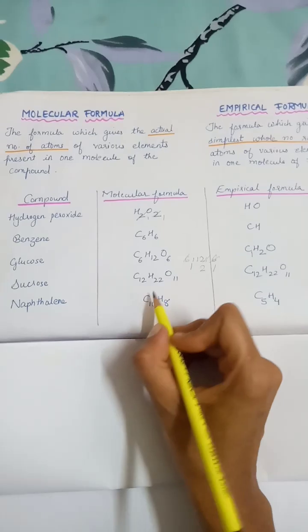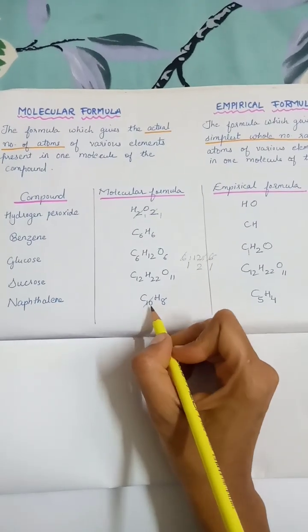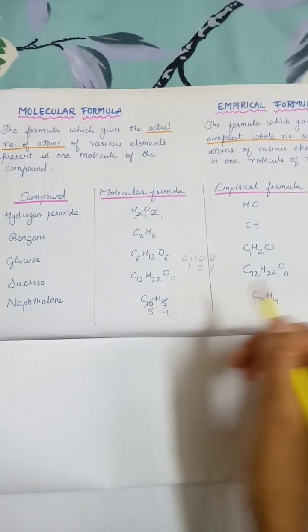Naphthalene C10H8. So when you take the ratio, that is 2 5s are 10, 2 4s are 8.